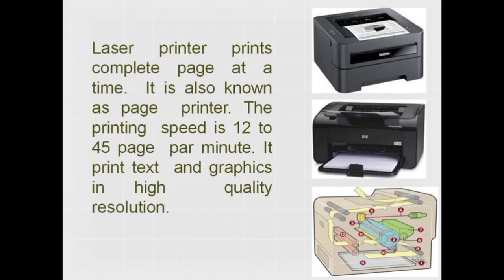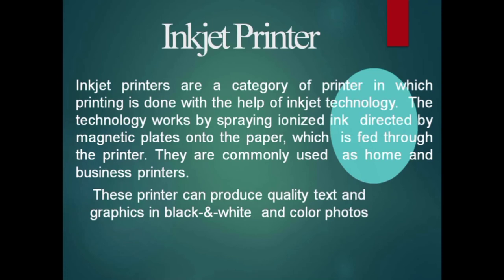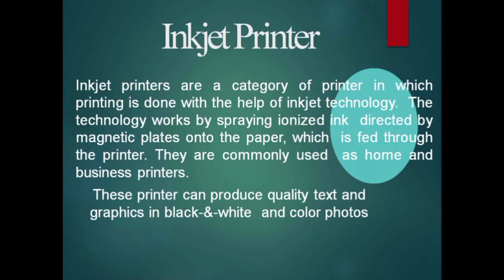The printing speed of a laser printer is 12 to 45 pages per minute, and it prints text and graphics in high quality resolution. The next type is the inkjet printer, in which printing is done using inkjet technology. The technology works by spraying ionized ink directed by magnetic plates onto the paper. They are commonly used as home and business printers and can produce quality text and graphics in black and white and color. Inkjet printers provide a resolution of 600 DPI or more, and their price is less than laser printers. Most inkjet printers can print 10 to 35 pages per minute.